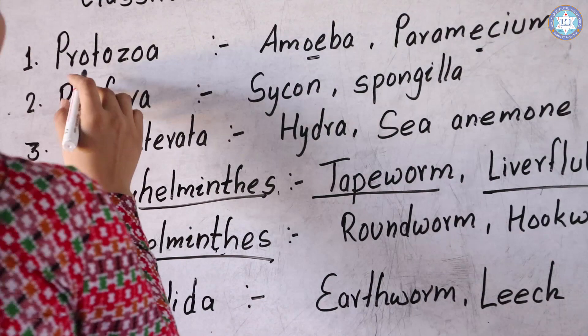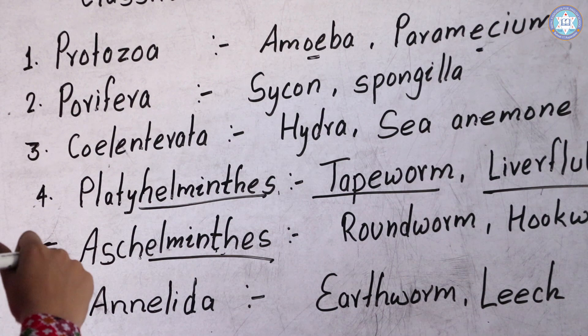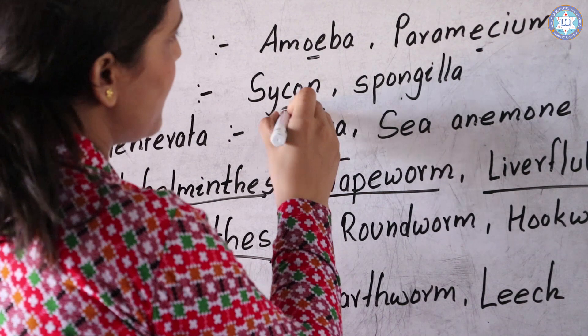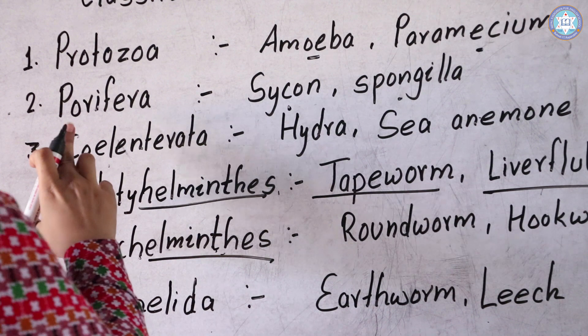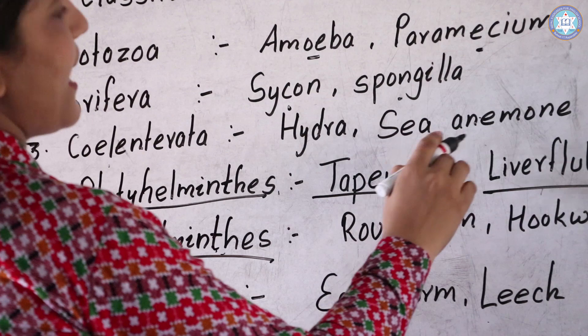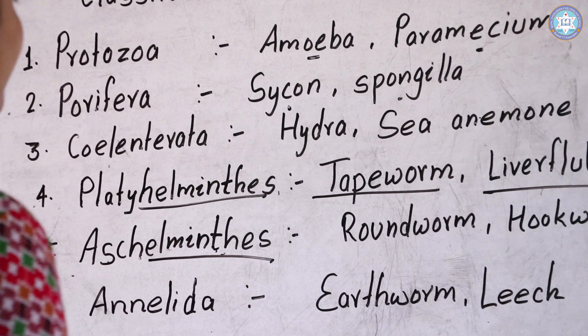Second phylum is Porifera, and their examples are Sycon and Spongella. Next is Cnidaria, and the examples are Hydra and sea animals. They are mainly found in the sea, as is clear from the name.